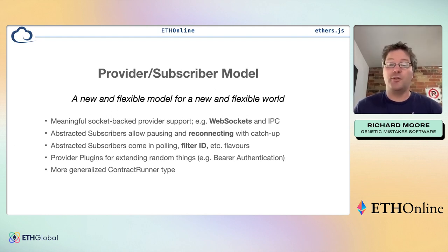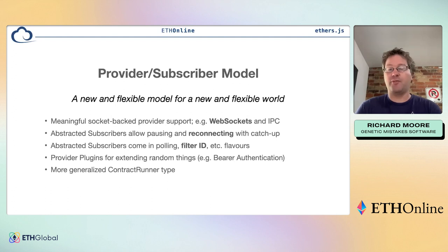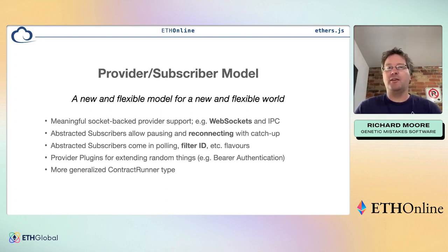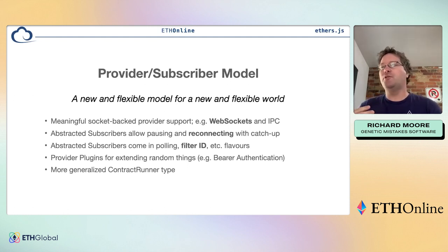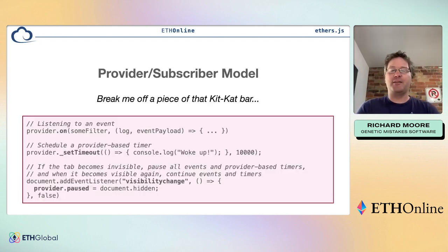The generalized contract runner is a higher-level interface. Historically in v5, you passed a provider, signer, or null into a contract. By generalizing it, anything can implement the interface — providers and signers happen to implement it, but you can now build your own, which enables cool things like mocking: a test contract runner that feeds fake but meaningful data to the contract as if it's talking to something real.